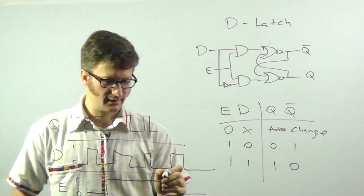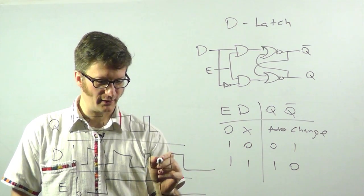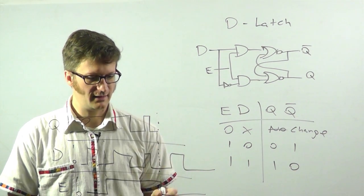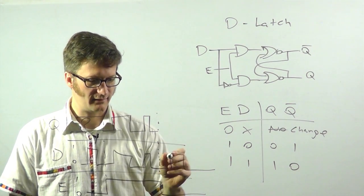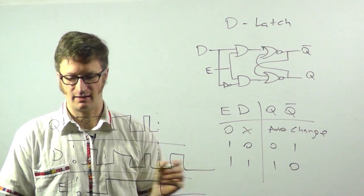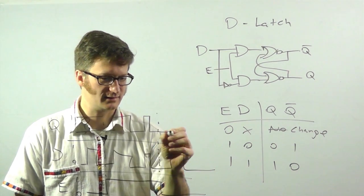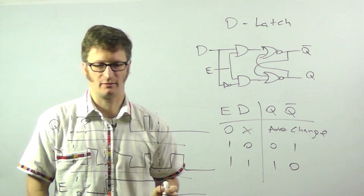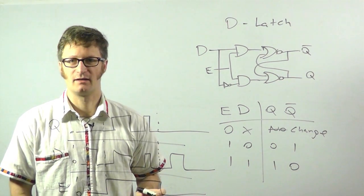At this point, when enable goes high, now I know for sure that it's low. And then here, at this point, enable is dropping down. So it doesn't matter anymore what data is doing. It's just going to stay low and it's going to retain its memory.